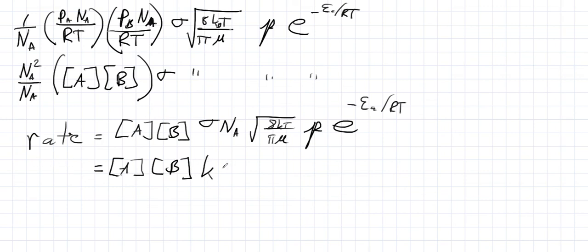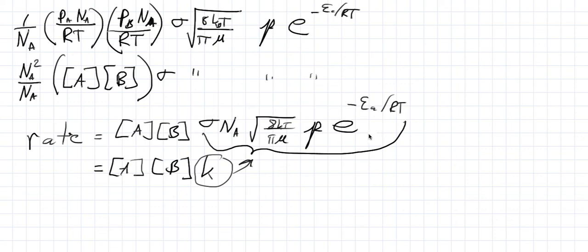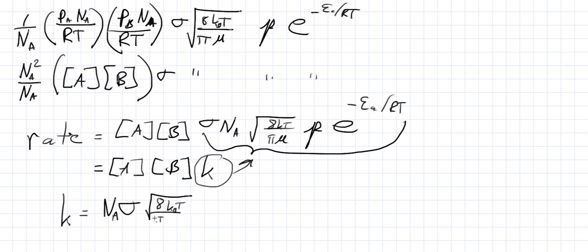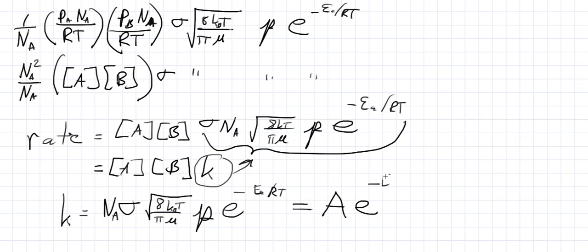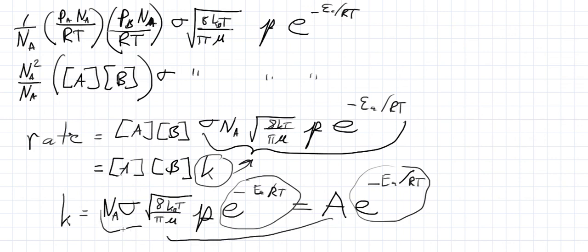This means we now have an expression for the rate constant K. K must be equal to Avogadro's number times the collision cross section times the relative speed (8kT / (π·μ)), times the steric factor, times e to the minus activation energy over RT. If we rewrite this as the Arrhenius expression K = A·e^(−Ea/RT), then A must be equal to Avogadro's number times the collision cross section times the relative speed times the steric factor. So now we have an expression for estimating the size of the Arrhenius pre-exponential factor A.